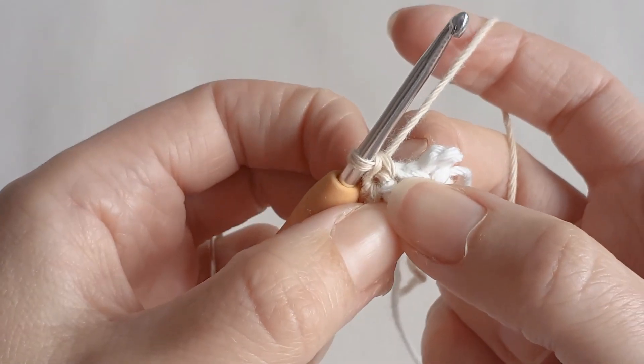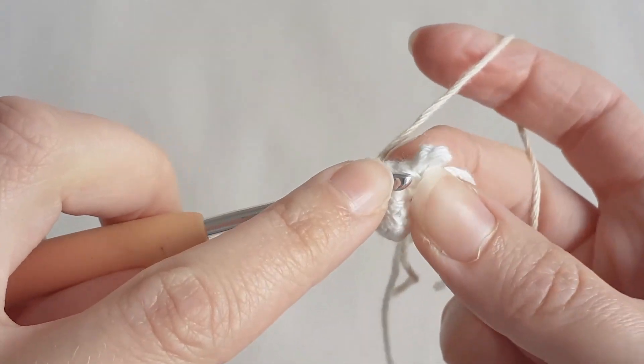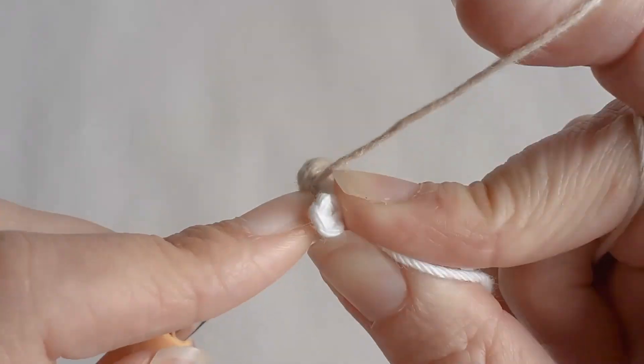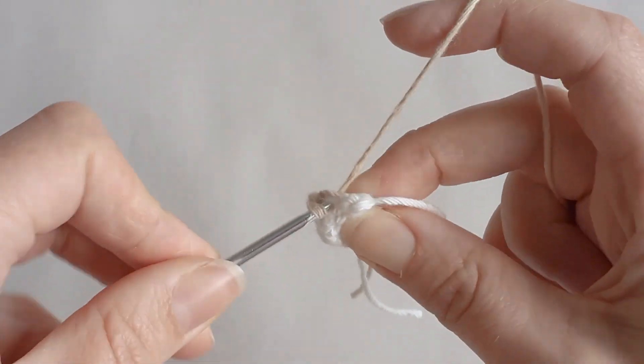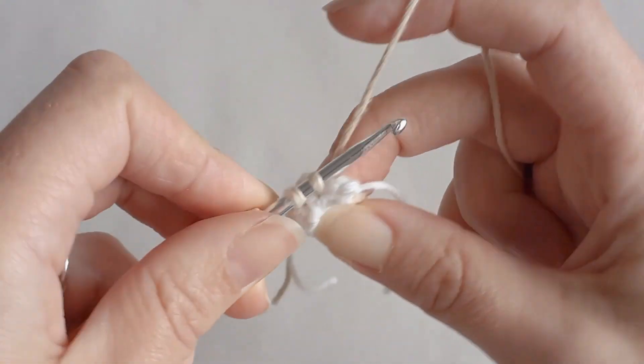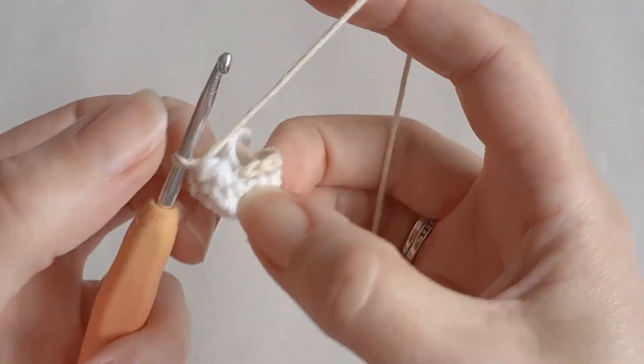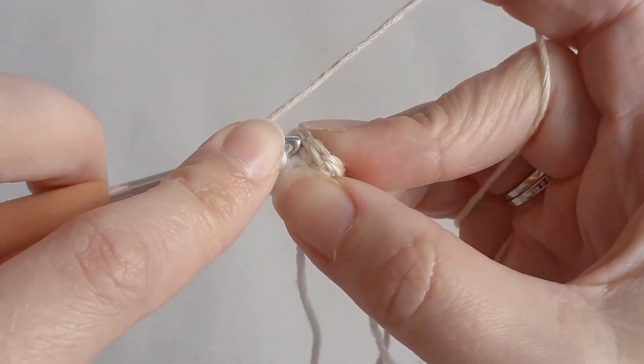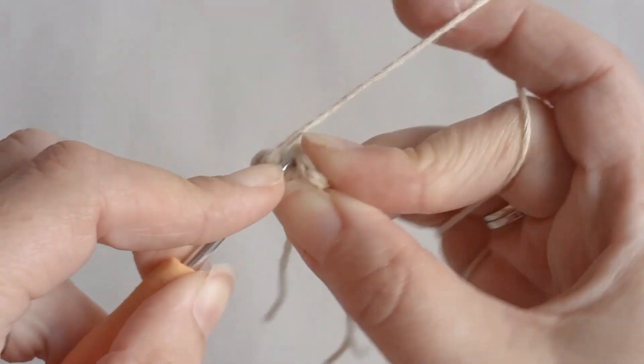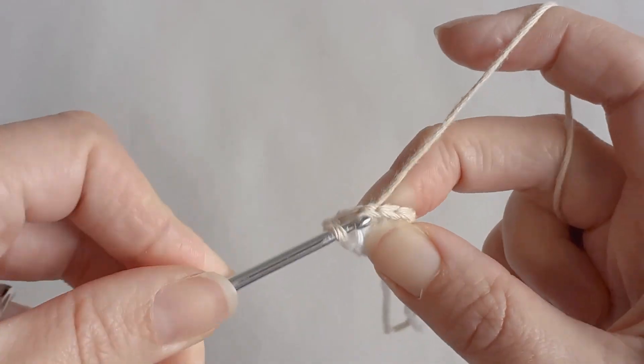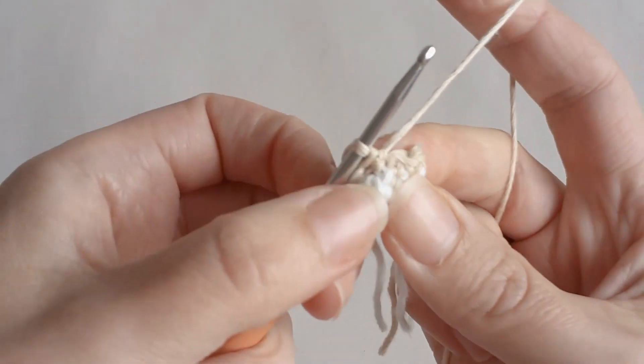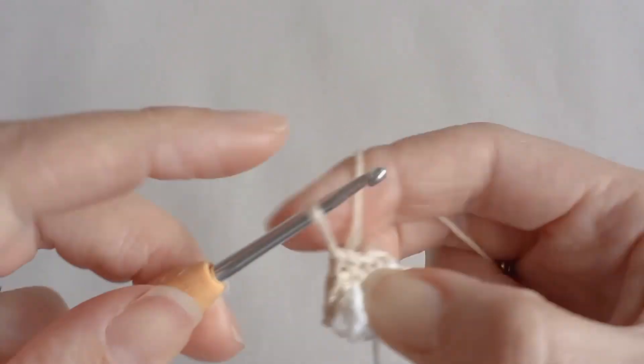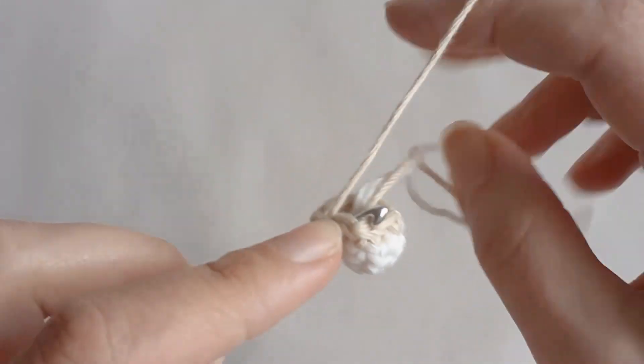When you get to the thumb, just put your single crochet in here, and then just work behind the thumb. Pull it down and single crochet into that first stitch. Pull it tight.